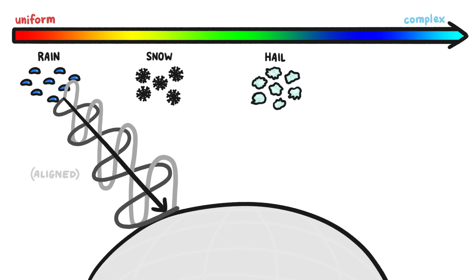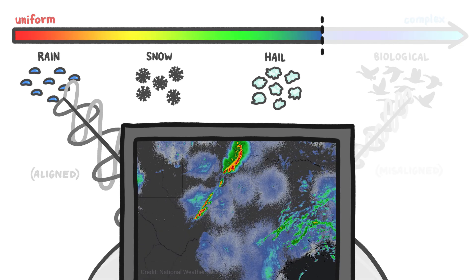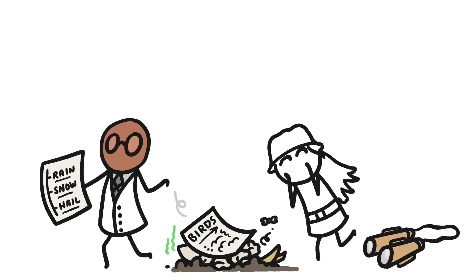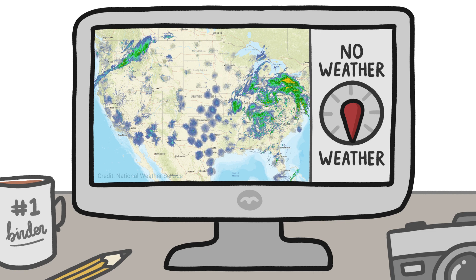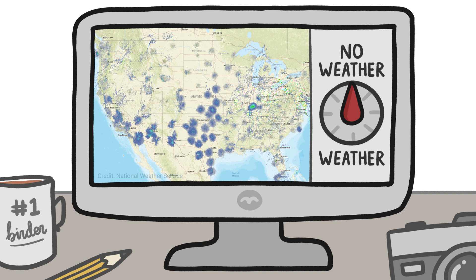But the less uniform things are, like hail, or even more so a flock of birds flapping their wings, the more the returned waves differ from each other. Computer algorithms can then filter out anything that's not uniform enough to be weather and get rid of it. But one scientist's trash is another scientist's treasure. Bird researchers realized they could use publicly available weather radar, but filter it in reverse, to get unprecedented information on birds.